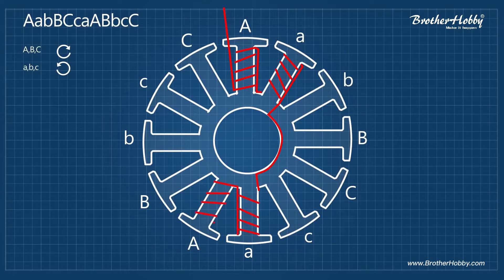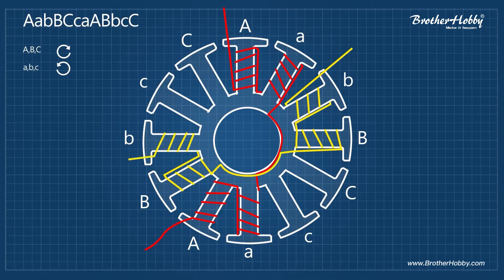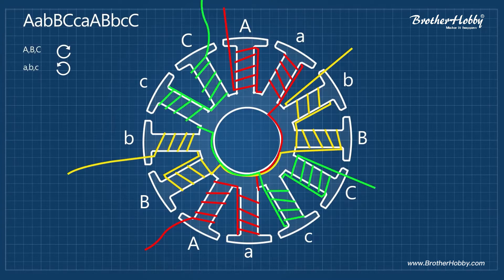Now we're going to take another copper wire to start phase B, and then phase C. To avoid any confusion you can use some tape to identify each terminal.